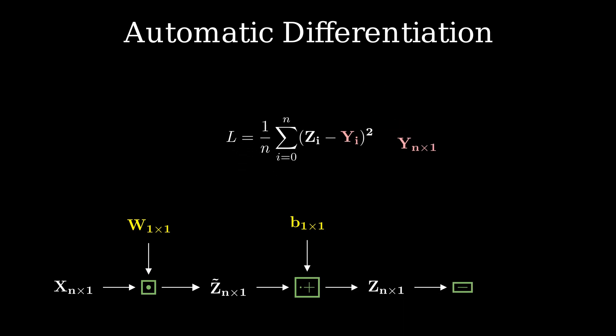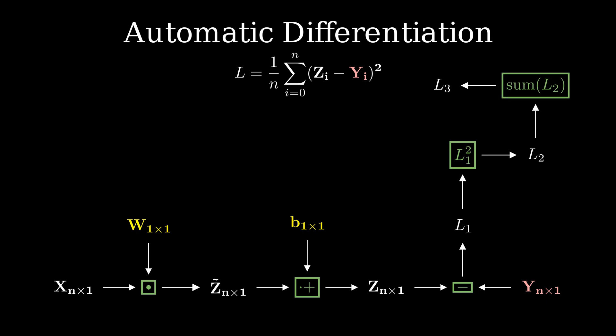Then it'll break up the cost function into the elementary operations starting by subtracting prediction from the ground truth labels. It then takes the square of the output followed by adding up all the elements of the vector. Finally, the normalization is done by dividing the result by a constant which is equal to the length of the vector.